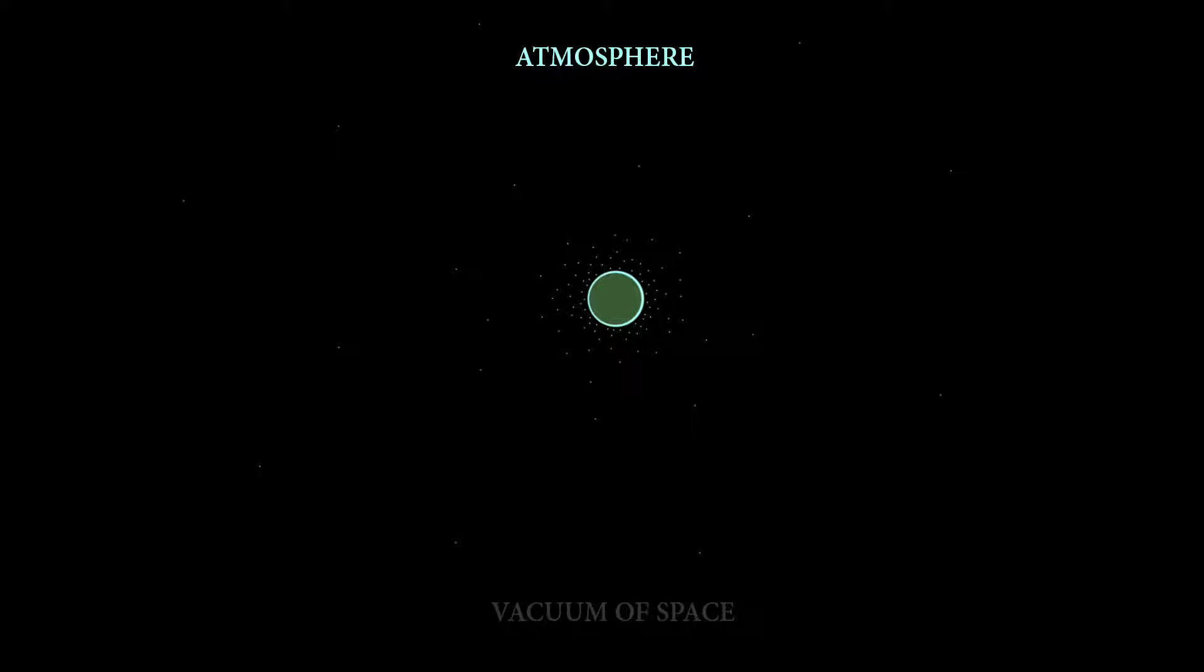So I want to visualize this vacuum. We got our atmosphere in light blue, then we have the vacuum of space, and we're just sitting in a vacuum. That's what we're doing, just spinning around in a vacuum.